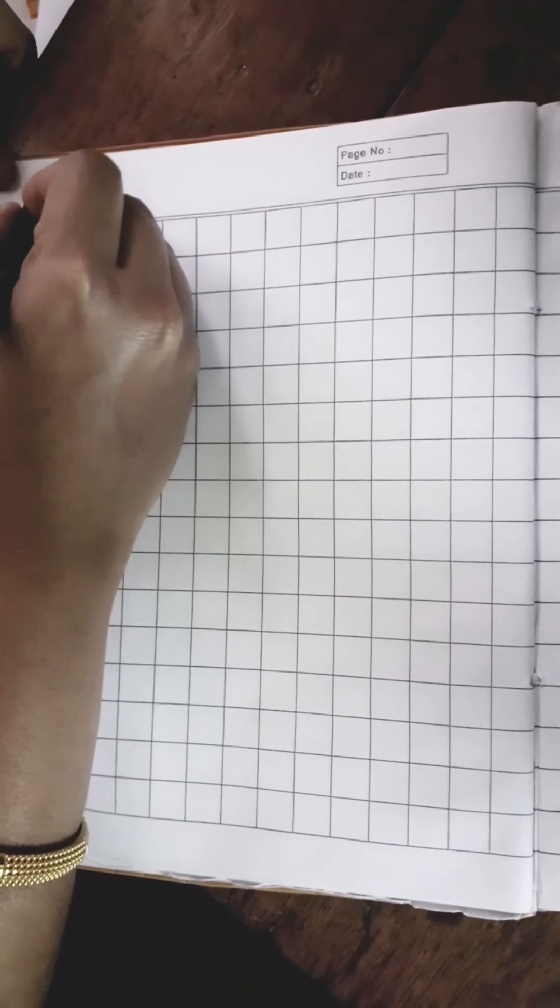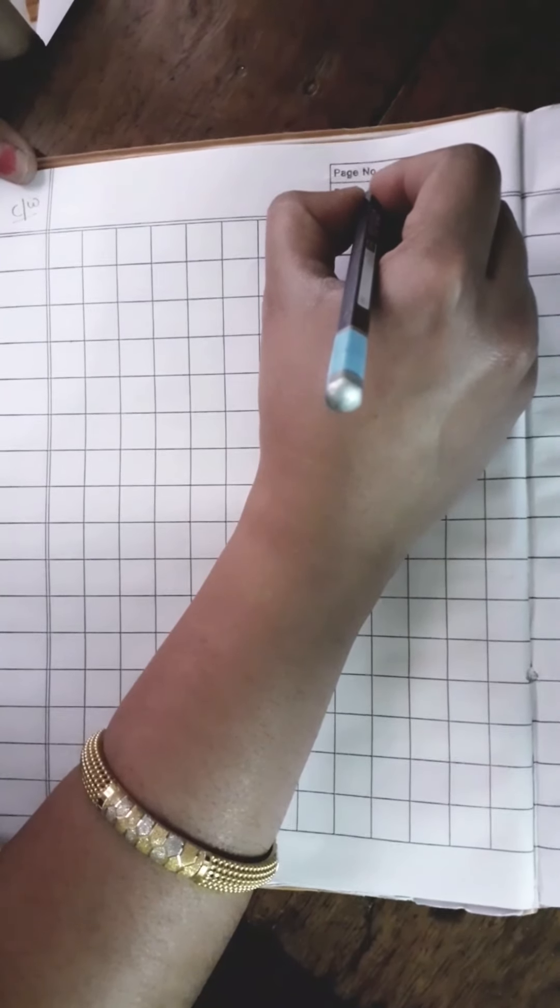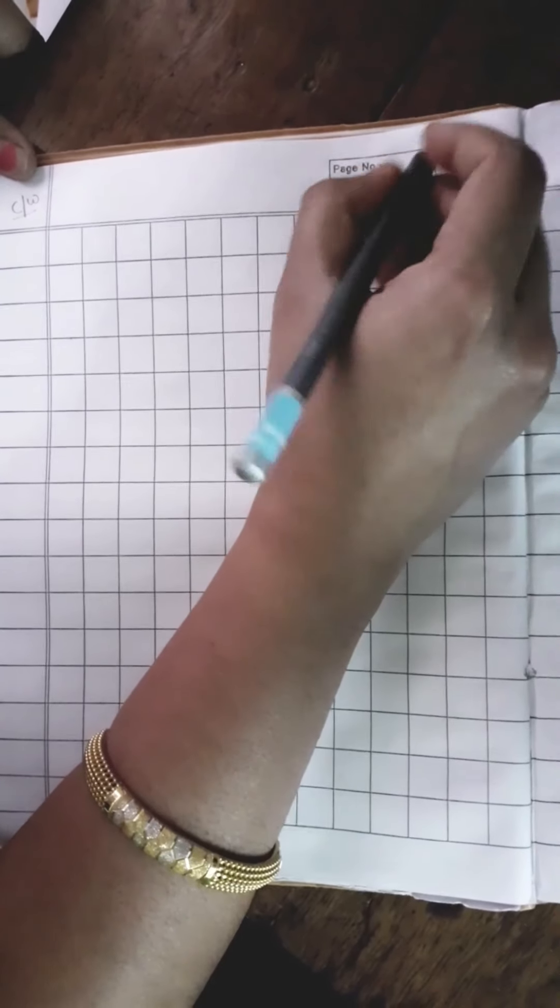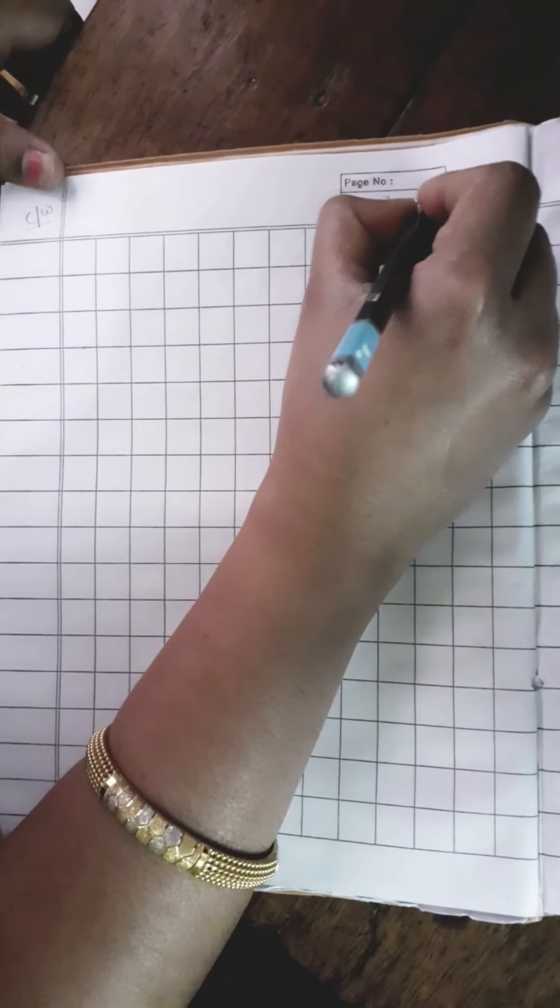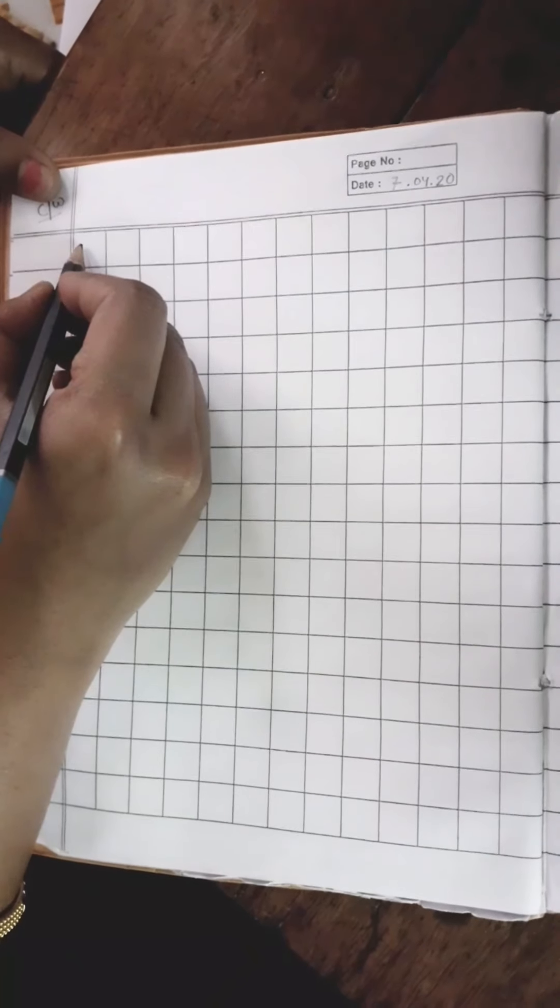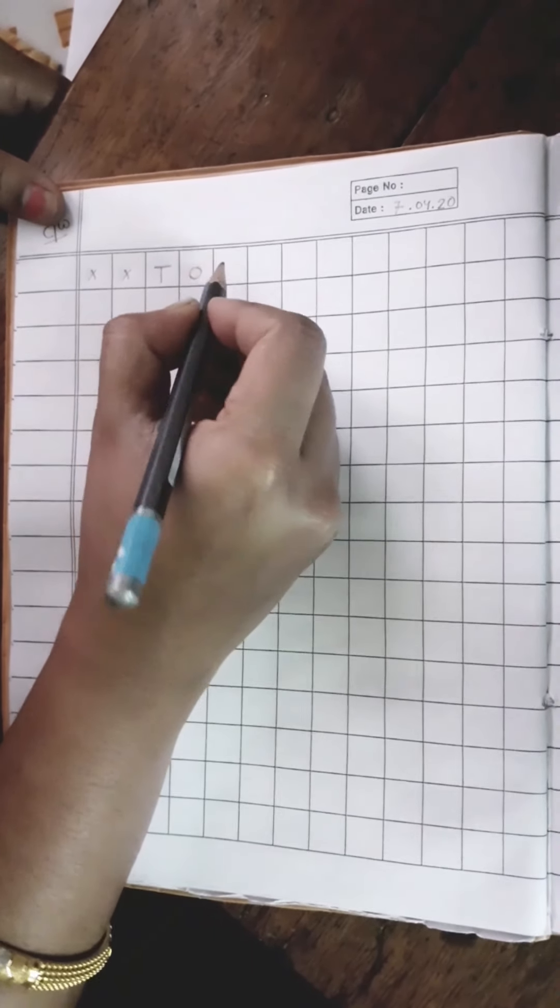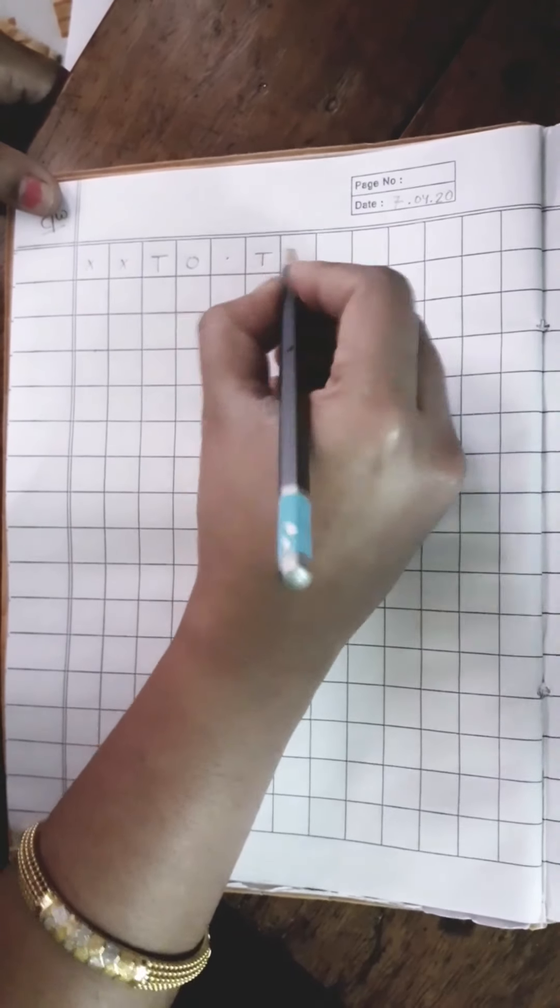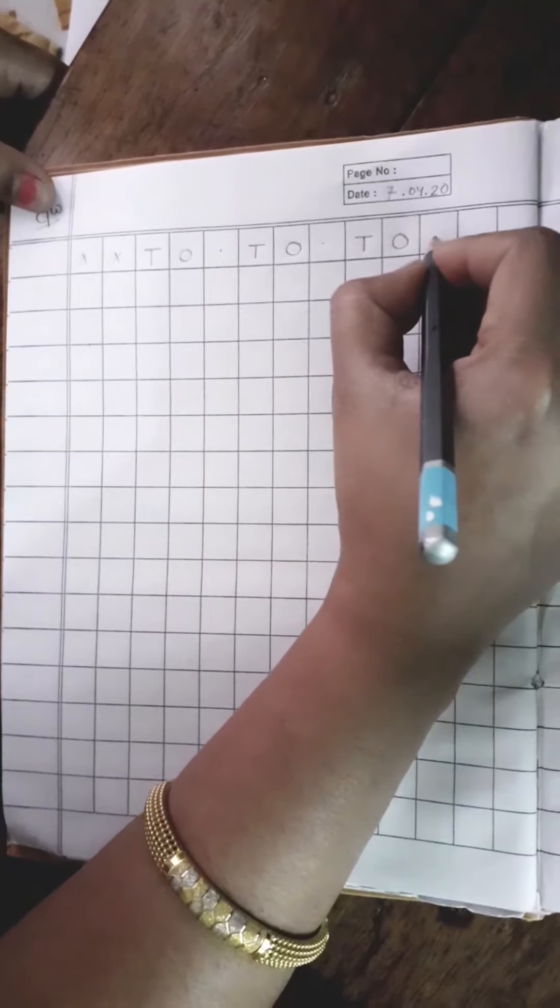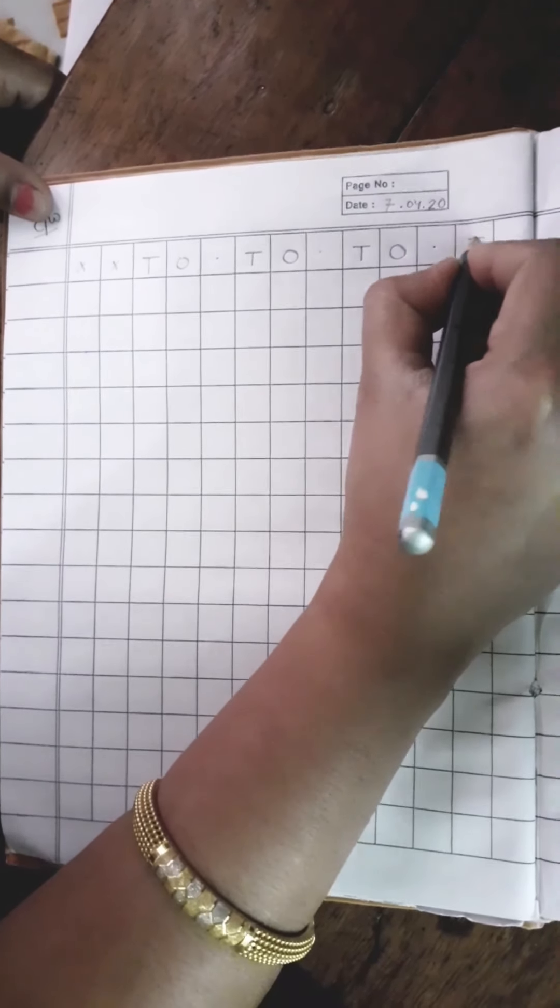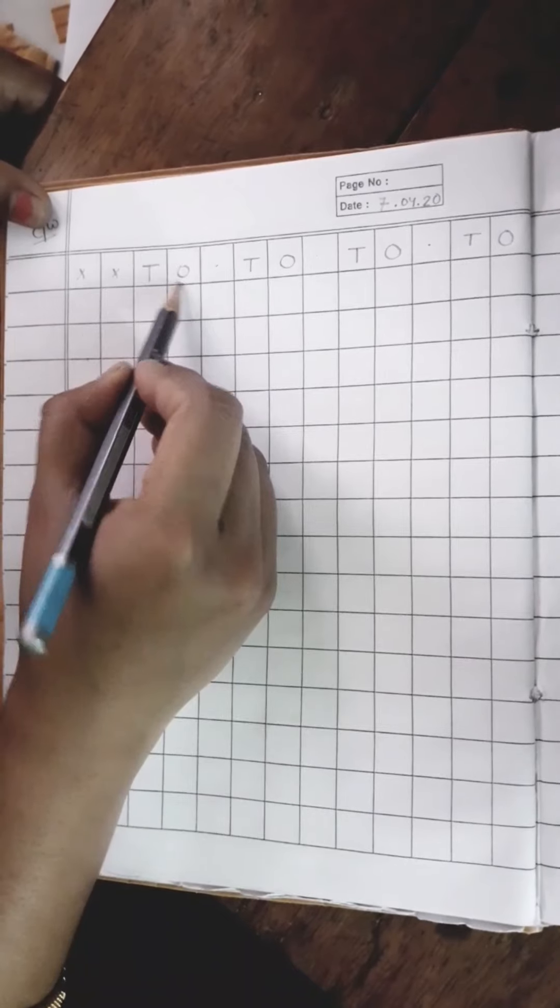First, you will write class work in the left top corner of your copy and then you will write date in the right top corner of your copy. Parents can help you while writing this class work and date. Now leave two lines from the left side of your copy. Then write T O, then give a dot. Again write T O, again give a dot. Write T O. Children, T for tens and O for ones. Very good.